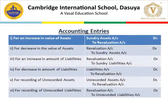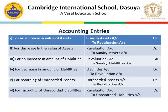Now we are going to do accounting treatment of revaluation of assets and reassessment of liabilities. Revaluation of assets means increase or decrease in the values of assets, and reassessment of liabilities means increase or decrease in the amount of liabilities. There are six cases. Number one: for increase in the value of assets, the journal entry will be sundry assets account debit to revaluation account. Number two: for decrease in the value of assets, the entry will be revaluation account debit to sundry assets account. The rule is whenever assets increase, debit; whenever assets decrease, credit.